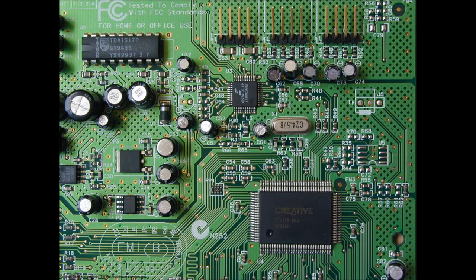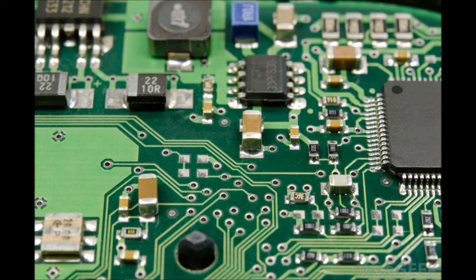A printed circuit board mechanically supports and electrically connects electric components such as capacitors, resistors, or active devices, using conductive tracks.